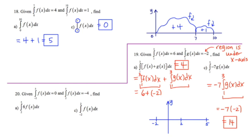For the last question, we have two new clues: the area under the curve of F from negative 2 to 5 is 0, and the area under the curve of F from 2 to 5 is negative 4 — meaning that region is under the x-axis. If the total area from negative 2 to 5 is 0, then the area from negative 2 to 2 must counter that negative 4. So the area from negative 2 to 2 has to be positive 4, making the overall area from negative 2 to 5 equal to 0.